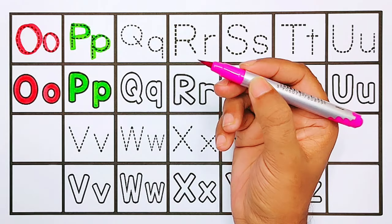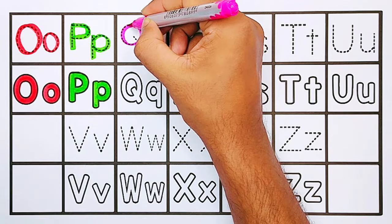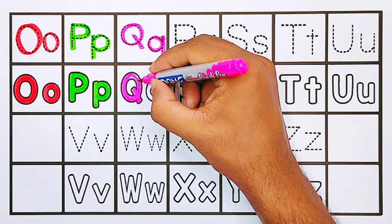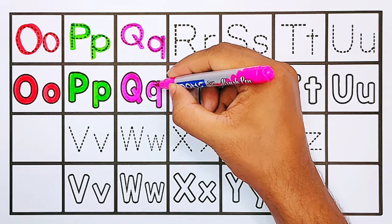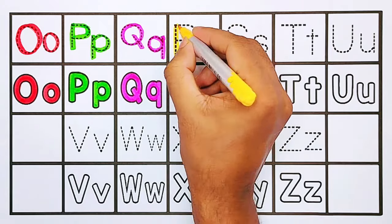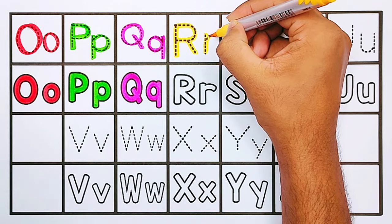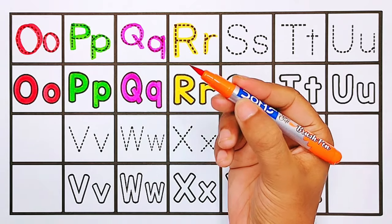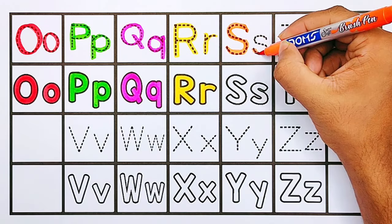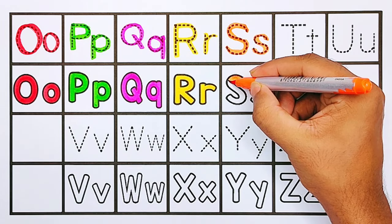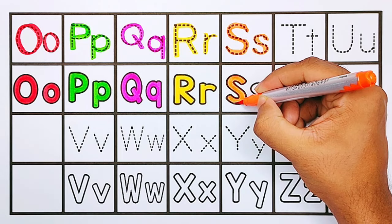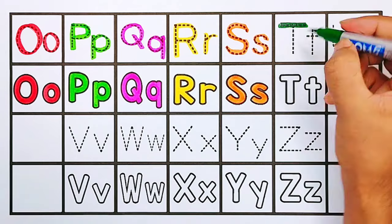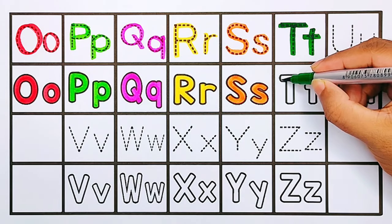Q, Q for quads. Yellow color. R, R for red. Orange color. S, S for strawberry. Dark green color. T, T for tomato.